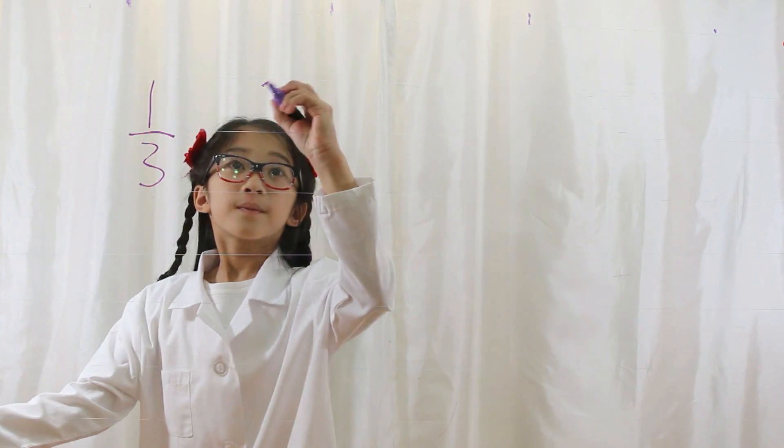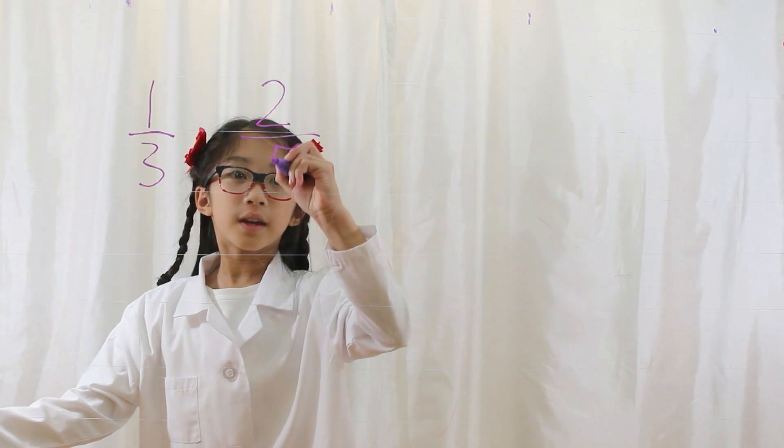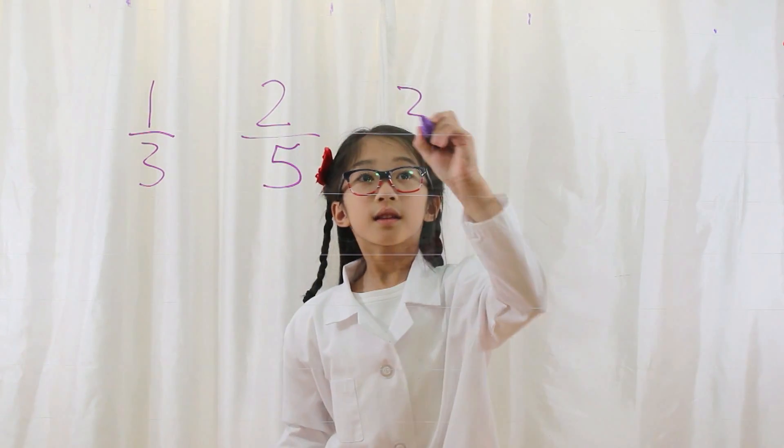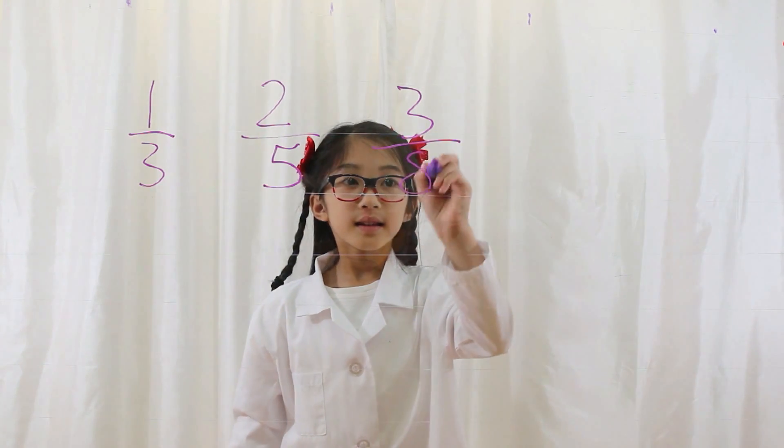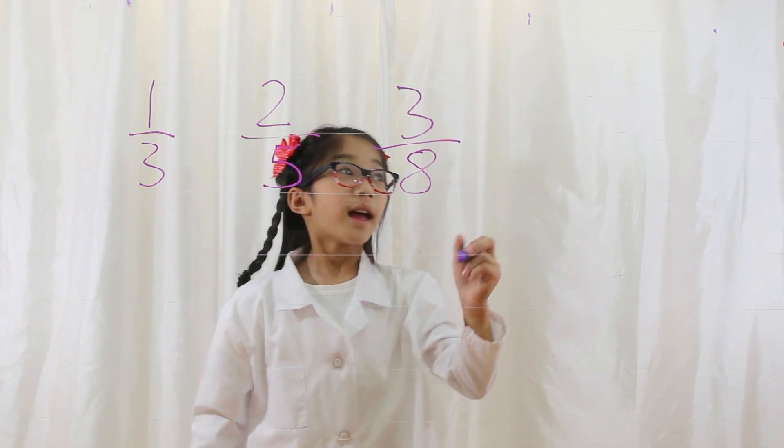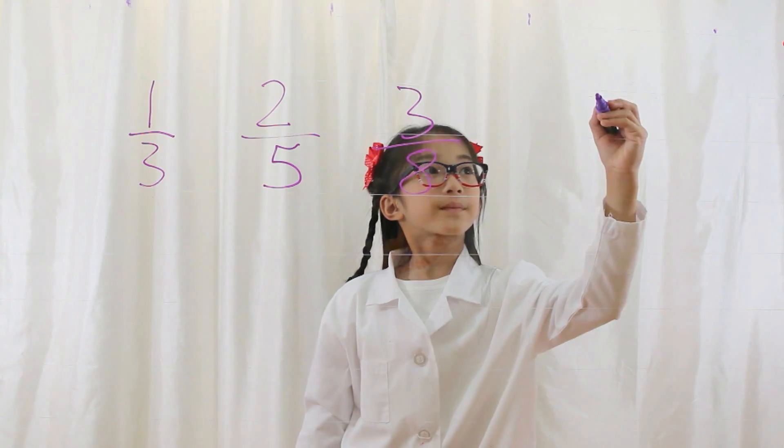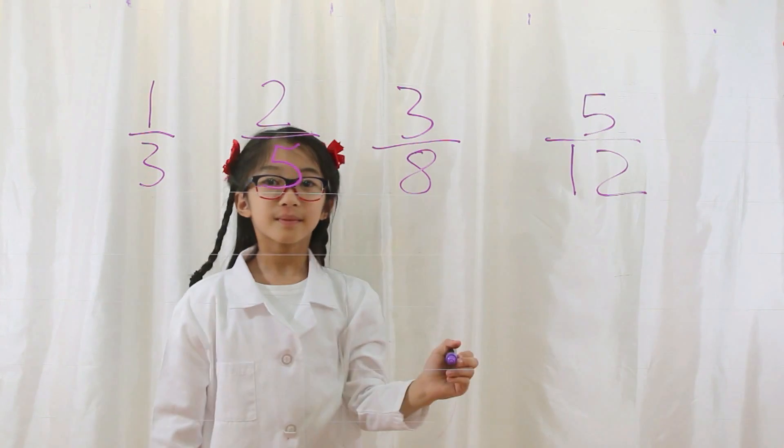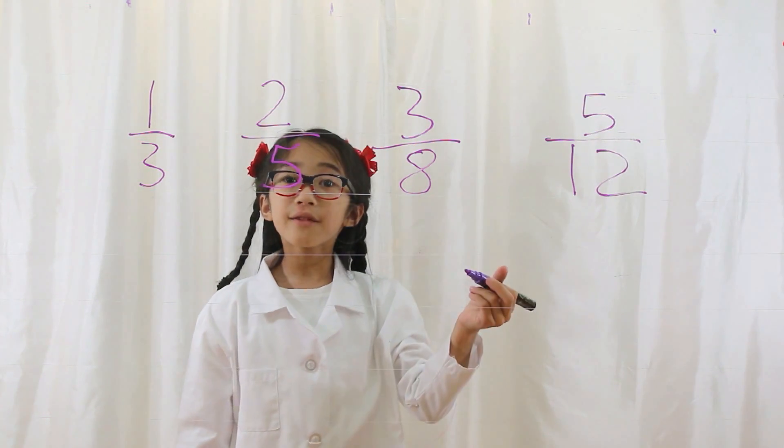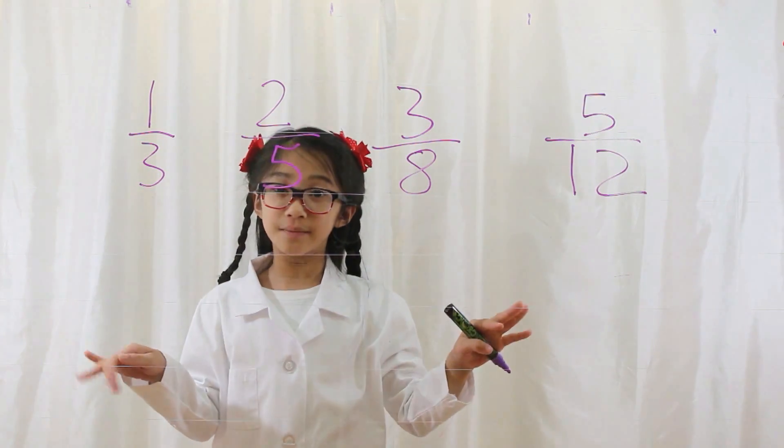Let's say you have the fraction one-third, two-fifths, three-eighths, and five-twelfths. These are fractions that you cannot simplify.